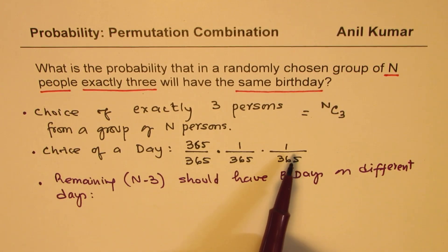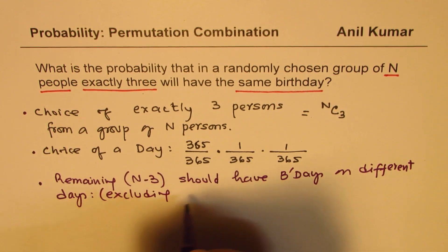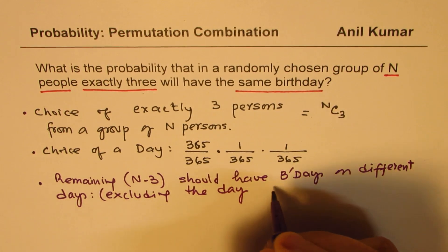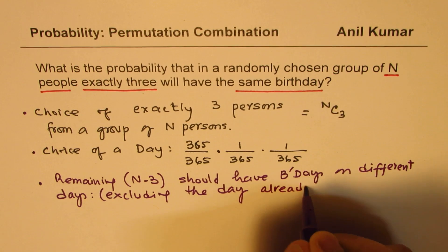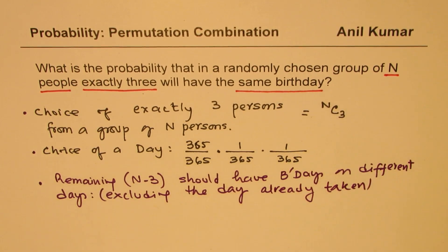Remaining n minus 3 should have birthdays on different days, excluding the day already chosen, excluding the day already taken when all three have the same birthdays.